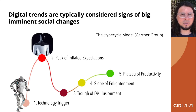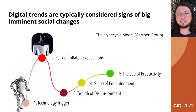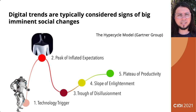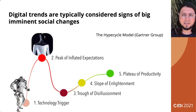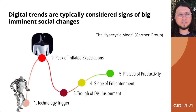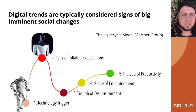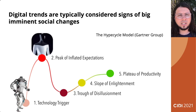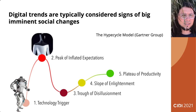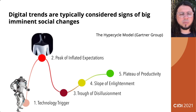Today, in our society, digital trends are typically associated with and considered signs of big imminent social changes. There are many different ways of conceiving them, but the hypercycle model from Gartner Group, which is widespread in the industry, states that digital trends stem from a technology trigger — a possibility that technology offers to society.